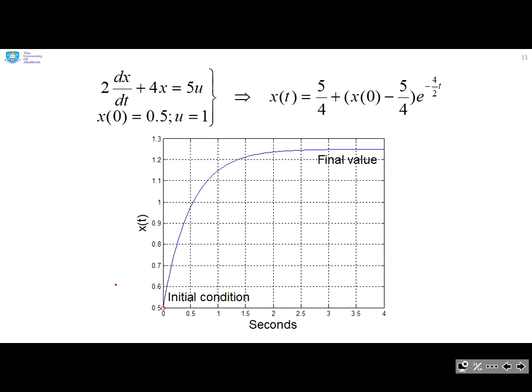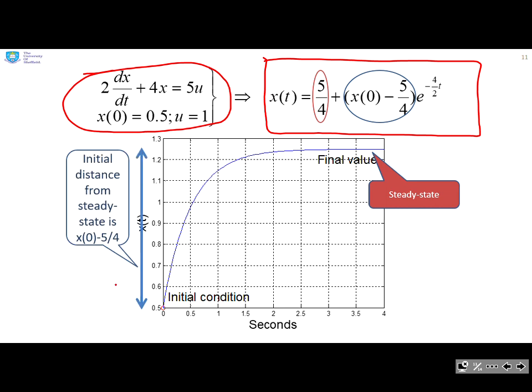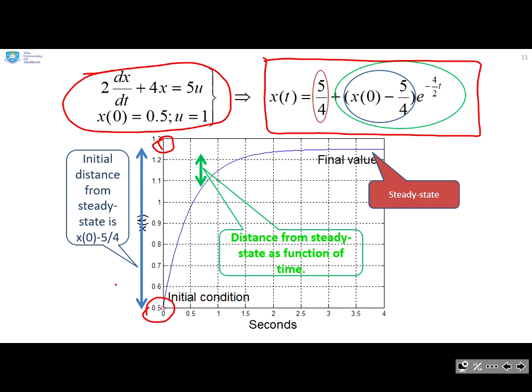So here's an example then. You can see I've given you the differential equation up here and some initial conditions. And I've set u equal to 1. Now if I find the solution, the solution is here. I'm not going to do that slowly, you can do that in your own time. So first of all, you notice the 5/4 gives you the steady state. And you can look at the graph and you can see, yes, that is indeed the steady state. The x(0) minus 5/4, you can see here, gives you the initial distance from the steady state. So I start from 0.5, I finish at 1.25. So the difference between these two is how far I'm moving. And then you can see in green, how far am I actually from the steady state as I move with time? You're basically multiplying by this exponential term.